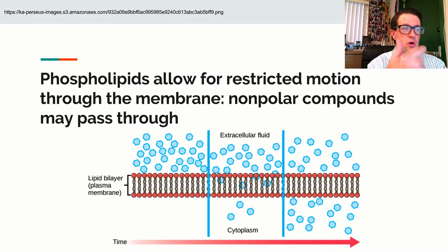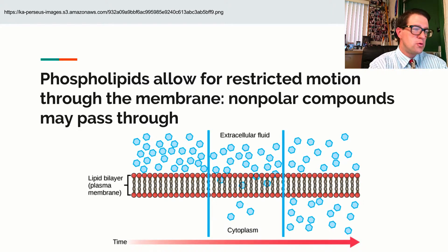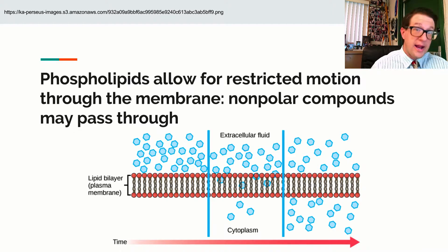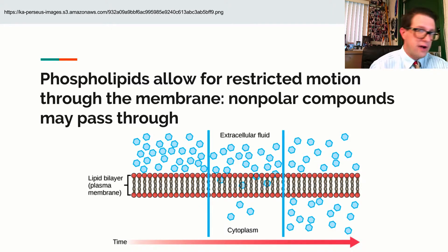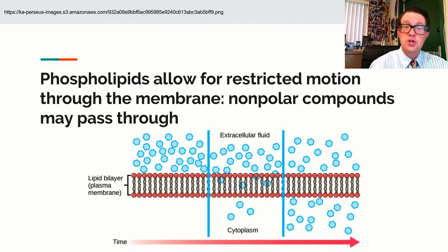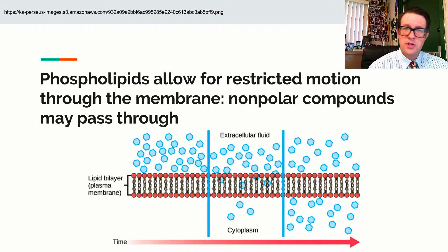The exception to that is there are substances that can move right through that phospholipid bilayer — those would be things we call non-polar compounds. An example of that would be gases; oxygen can flow right into a cell or right out of a cell. If I were to look at something like acetone — nail polish remover — that can wash into and out of cells, no issue, because it's non-polar.